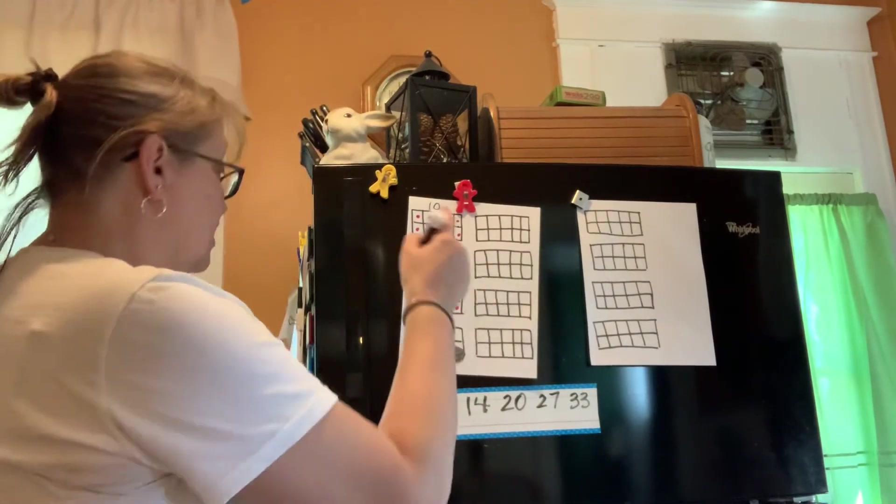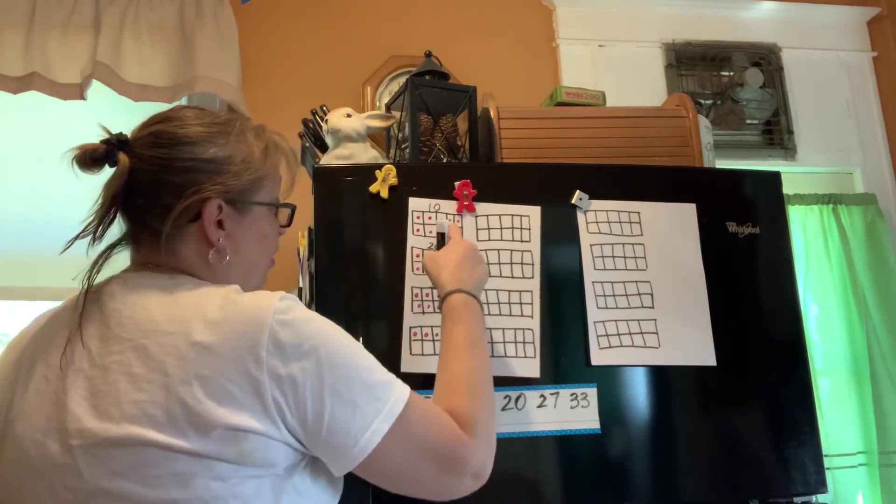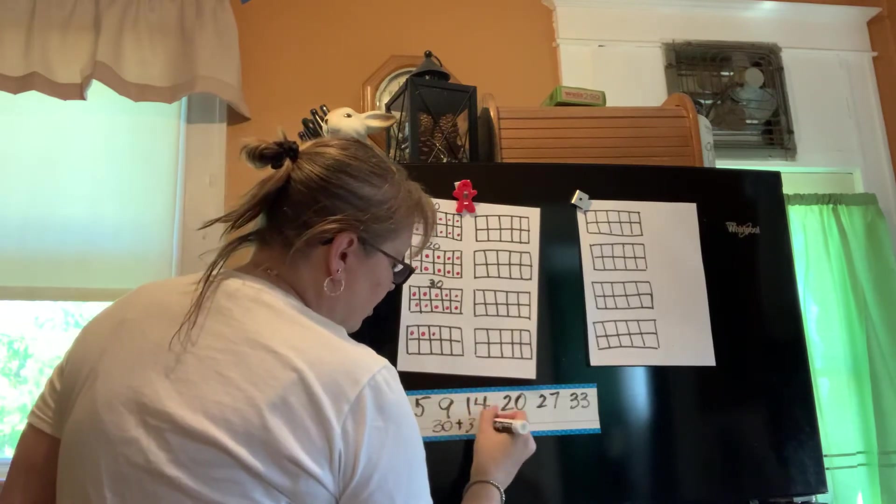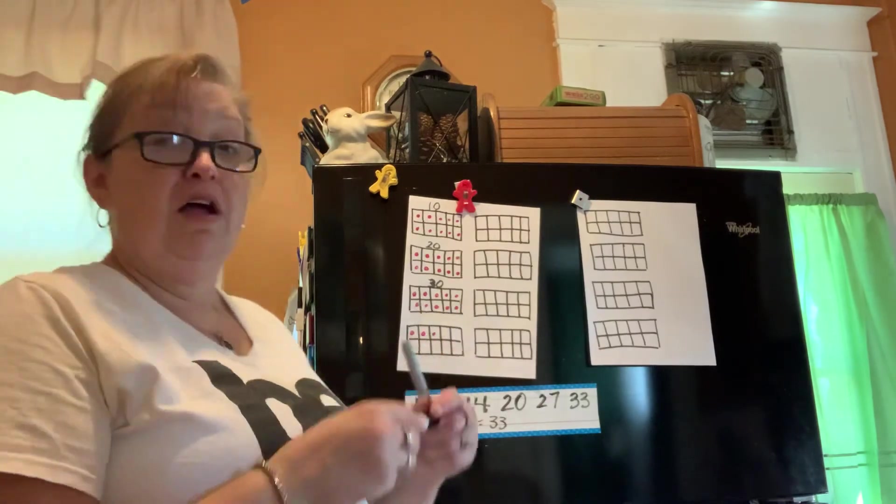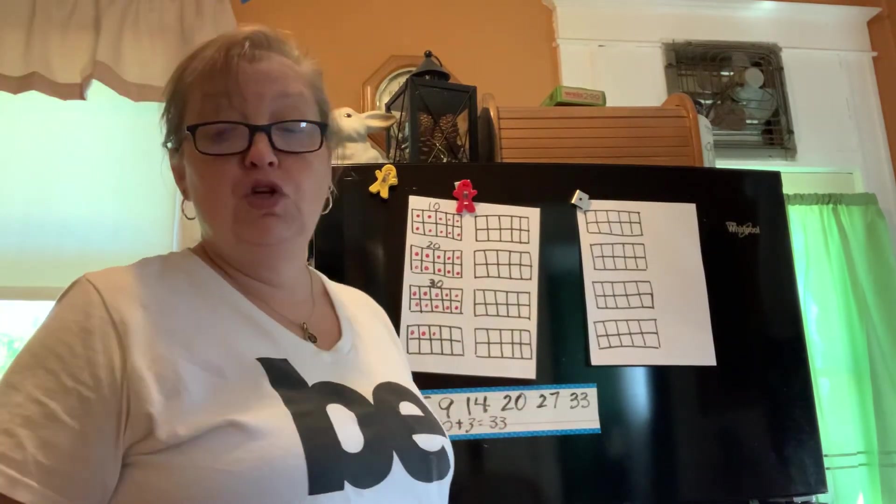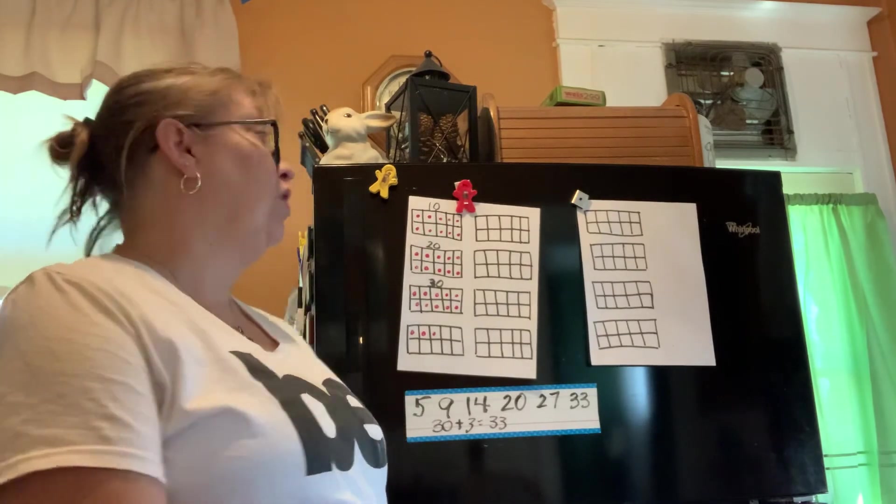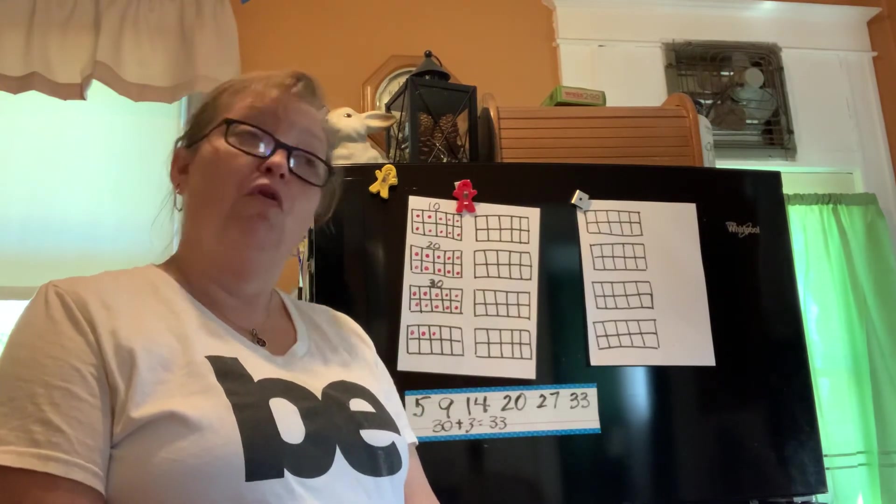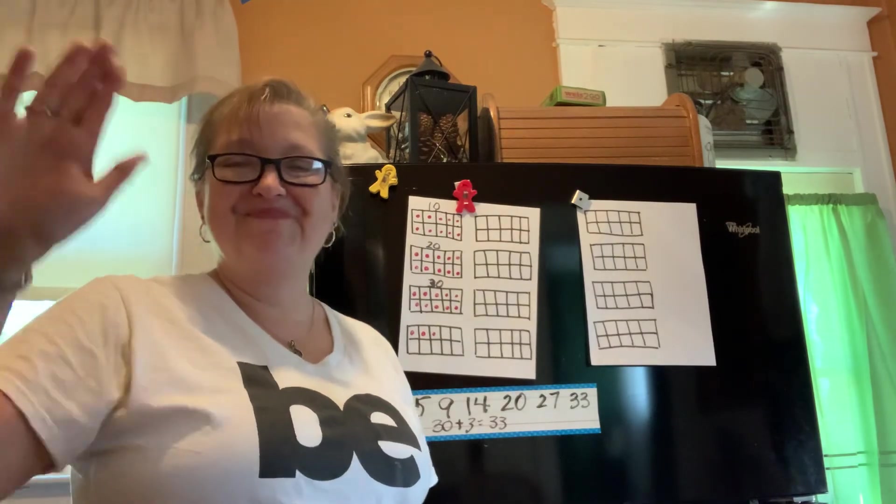All right. If you wanted to write a number sentence with that, you could write 30 because we have one, two, three 10s plus three more equals 33. So if you really want to do that, you can. Now, friends, if you want to do this and continue doing this, you may do your work packet page today for counting by 10s and 1s to 100 on your learning packet page. Have fun and keep on counting. Bye-bye.